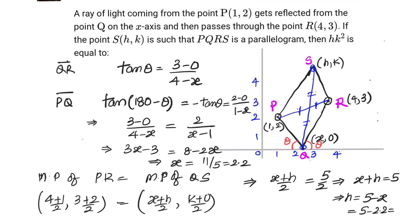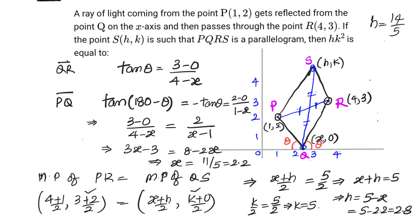Equating y-coordinates: k/2 = 5/2, so k = 5. Therefore hk² = (14/5) × 5 × 5, and the 5s cancel, giving hk² = 14 × 5 = 70.